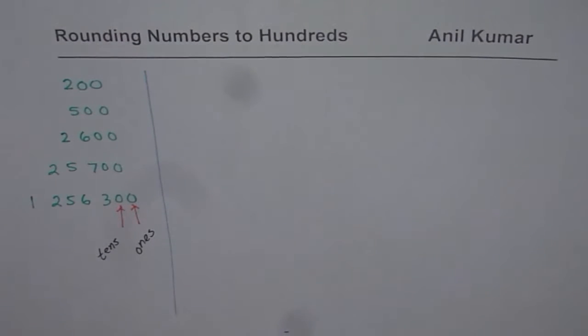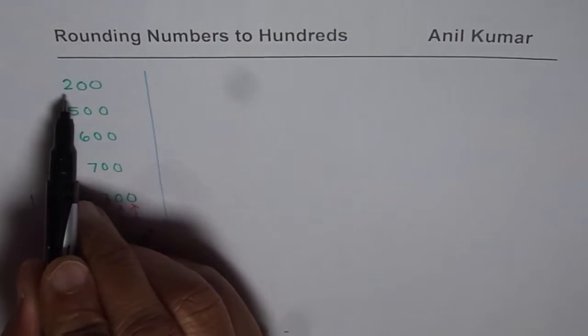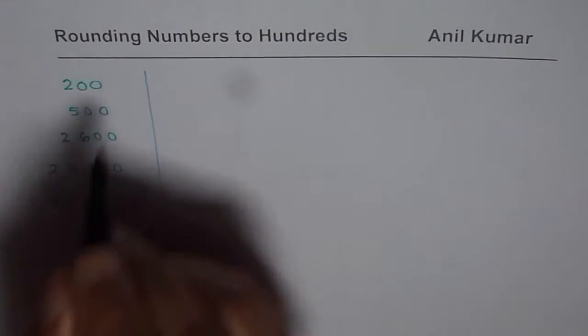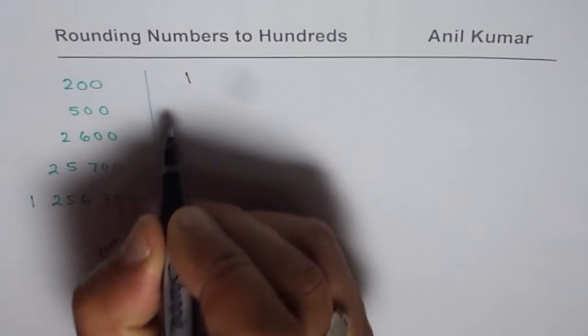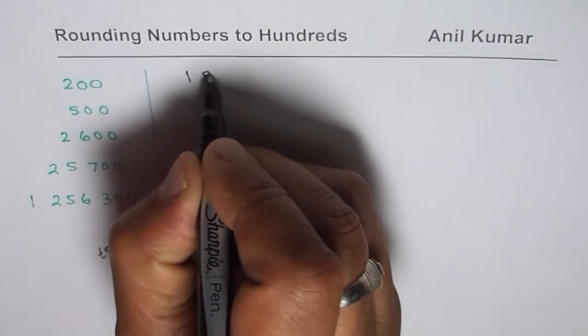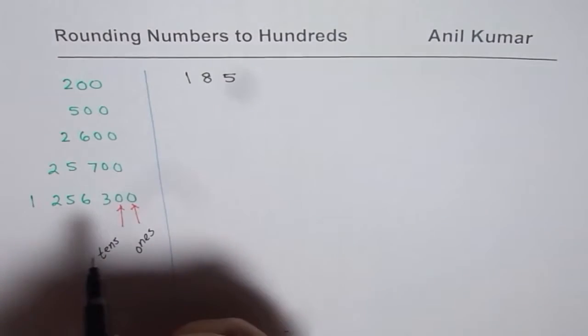So let's write down a few numbers. Let's say we want to round some number to 200. In that case we can take a number like 185. This will round to 200.